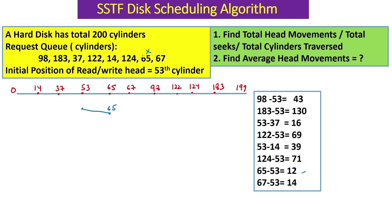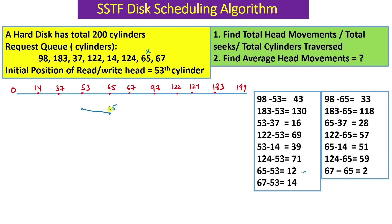65 is now done, so we mark it as crossed. From 65 as the current read/write head position, we find differences to remaining cylinders: 98 minus 65 = 33, 183 minus 65 = 118, 65 minus 37 = 28. The difference between 65 and 67 is 2, which is the minimum. So we move from 65 to 67.